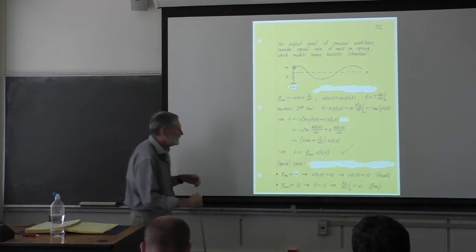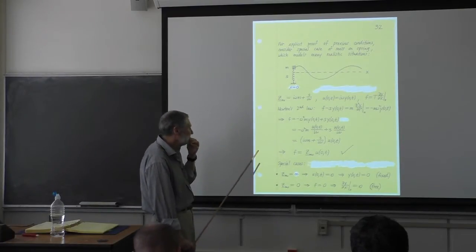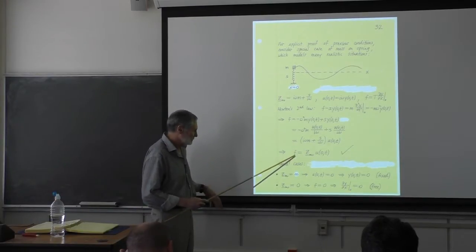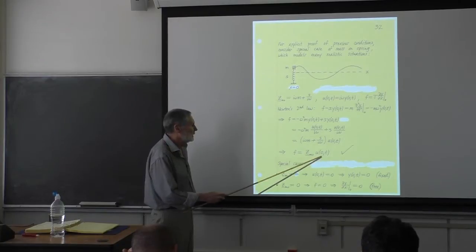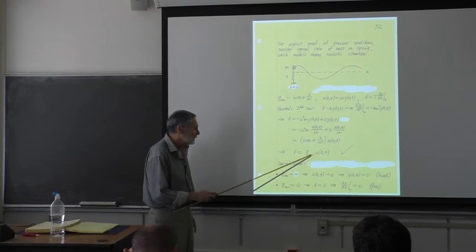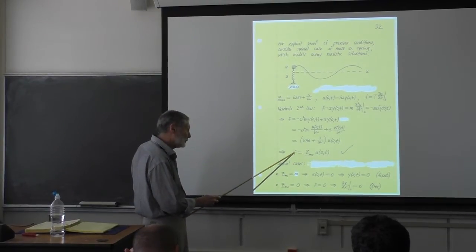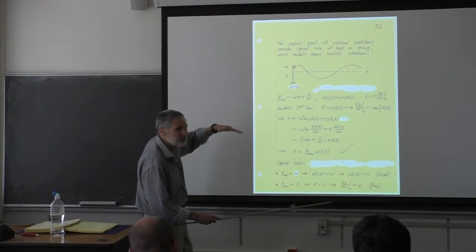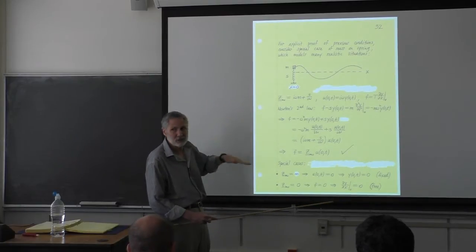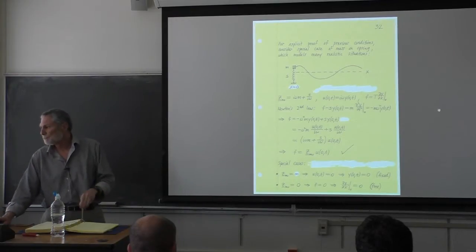We can look at this in special cases. Infinite impedance means zero velocity — that's a fixed termination. Zero impedance means zero force, which means the string has to have zero slope always — that's a free termination. So we're just confirming what we knew from before.